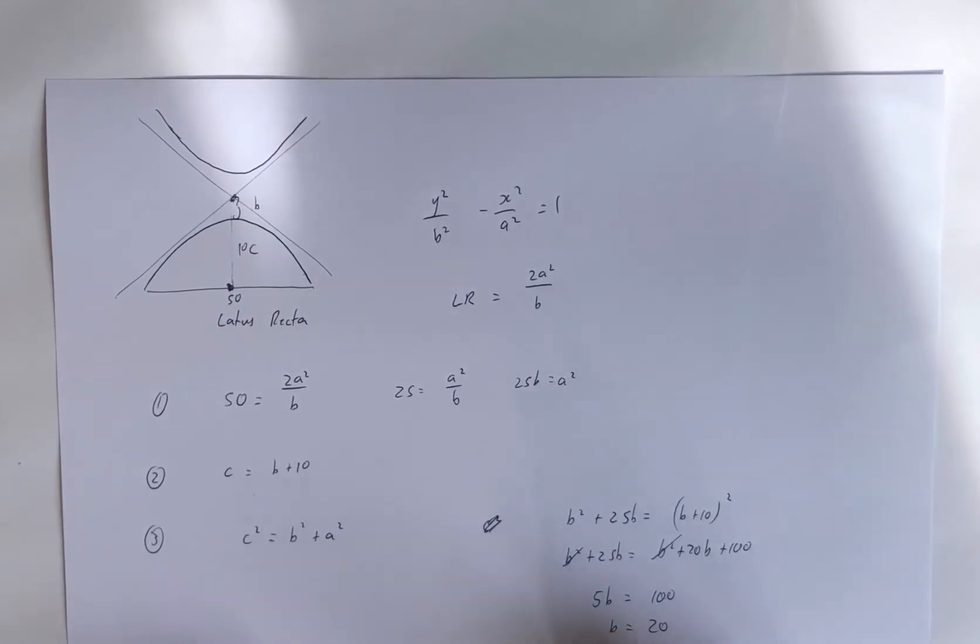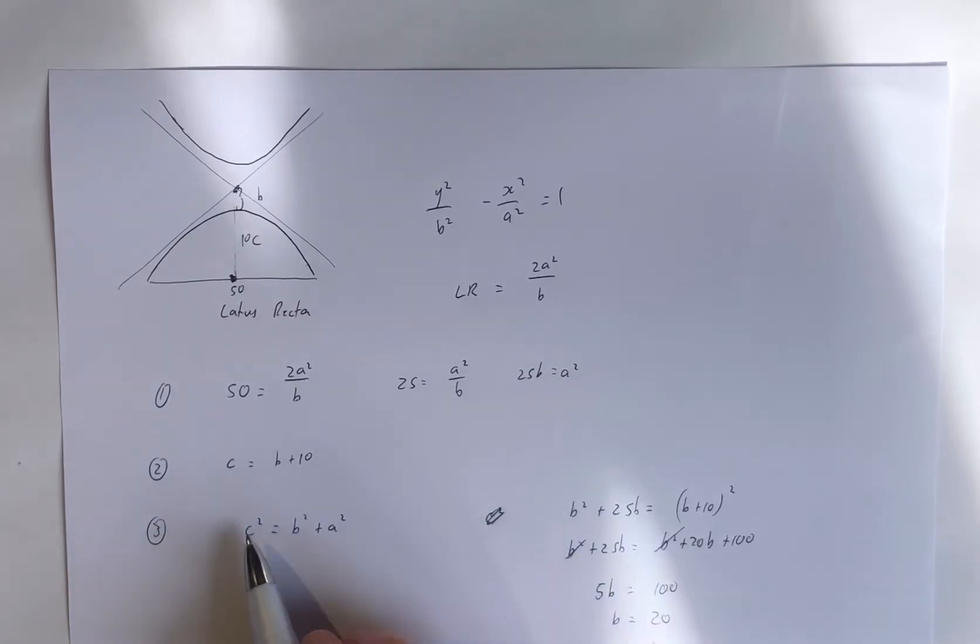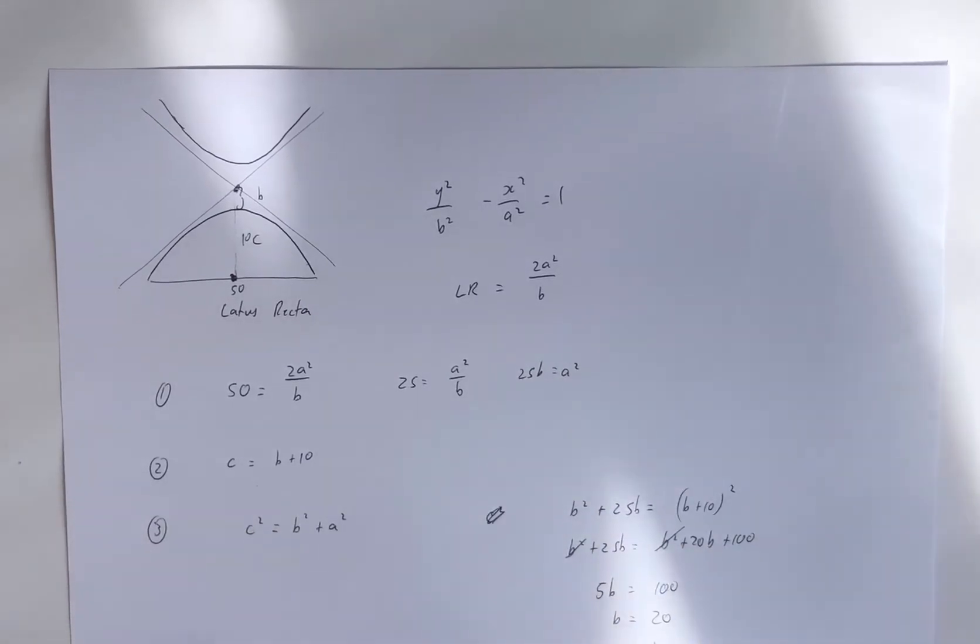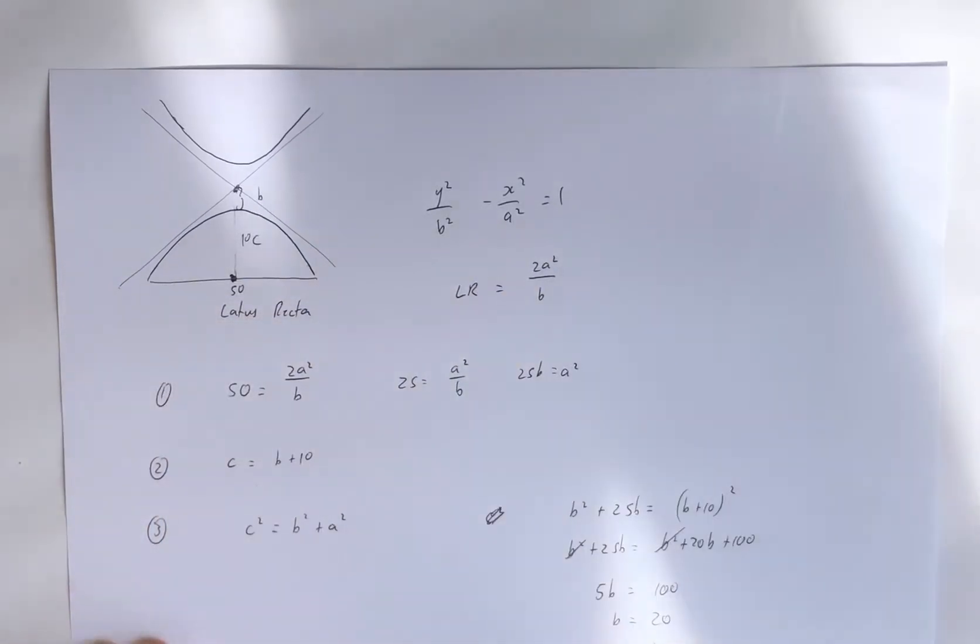Alright. If b equals 20, c is 30. And what's a going to be? Well, if we take 30 squared and take away 20 squared, and then square root that answer. 22.4.